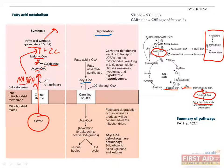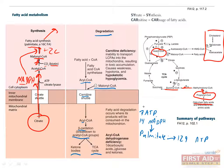Acyl coenzyme A is transported into the mitochondria using the carnitine shuttle, which is inhibited by malonyl coenzyme A. The fatty acid chains are broken at the bond between the alpha and the beta carbon, which is why this is called beta-oxidation. This results in acetyl coenzyme A molecules, which can then enter the TCA cycle or be used to make ketone bodies. With regard to net energetics, one molecule of palmitate can be used to make 129 ATP, whereas it requires 7 ATP and 14 NADPH to make one palmitic acid molecule.